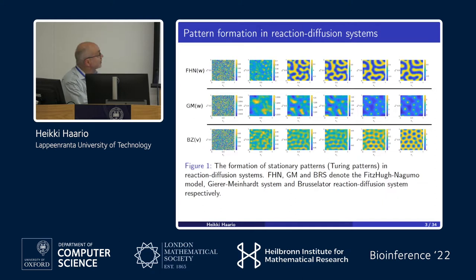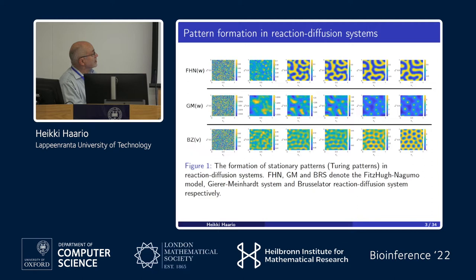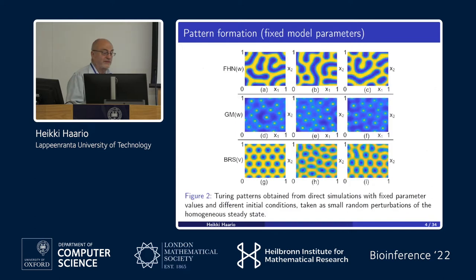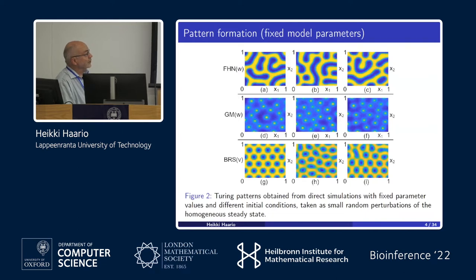To illustrate: we start with some initial values and have the typical three Turing pattern formation models — Nagumo-Kirillov, Meinhard, and Bell-dispersulator. Starting with initial values on a 2D square, the system gradually goes to some limit case. Even with fixed model parameters, we get different solutions that all look like each other — they come from the same family of solutions.